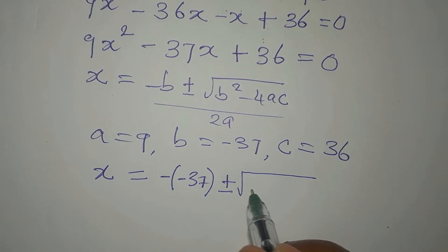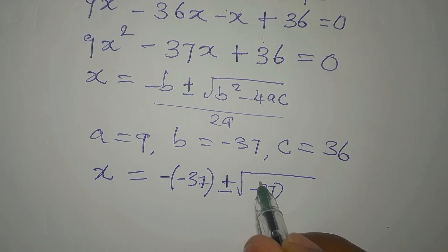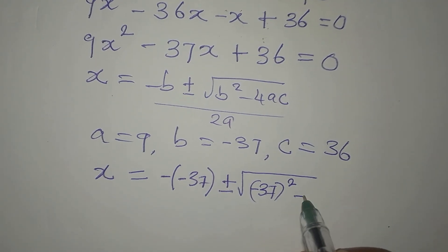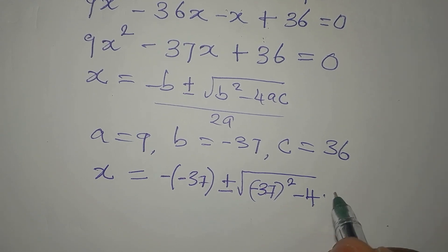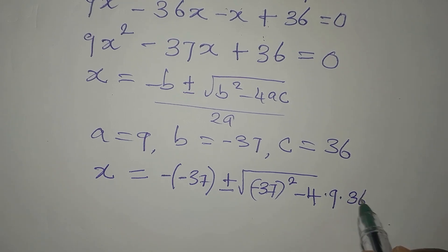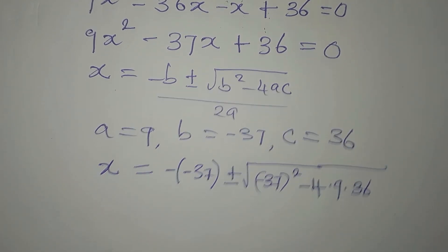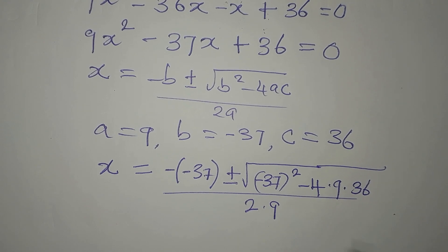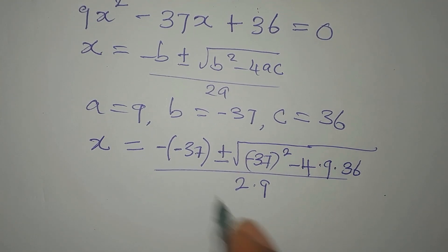we have square root of minus 37 squared minus 4, minus 4 times a is 9, and c is 36. Now, everything is divided by 2 times 9, because a is 9.